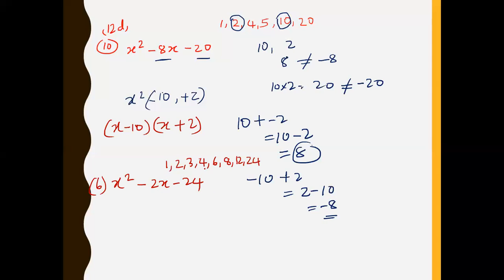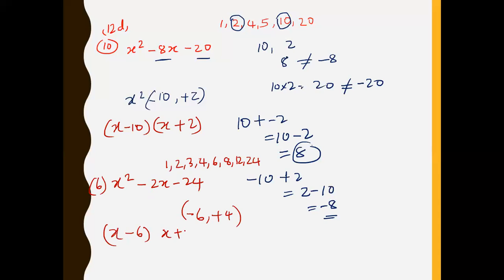Since the result needs to be negative 2, we give the negative to the larger number, which is six. So the factors are negative 6 and positive 4. Negative 6 times 4 is negative 24, and negative 6 plus 4 is negative 2. So we write the factors as x minus 6 and x plus 4.